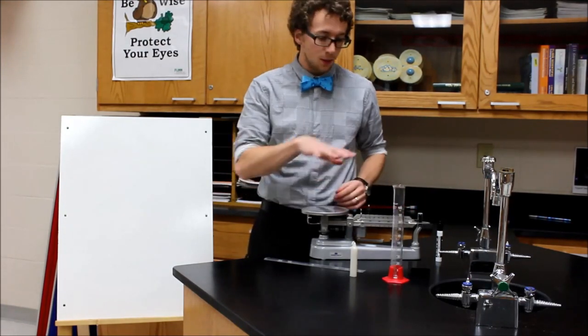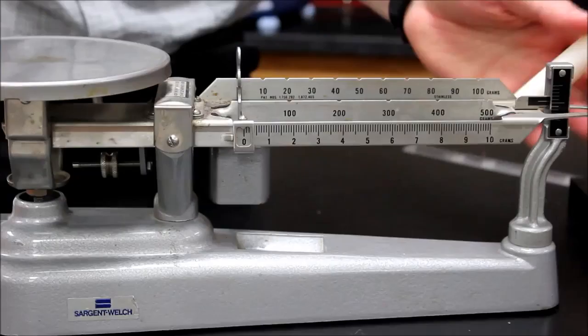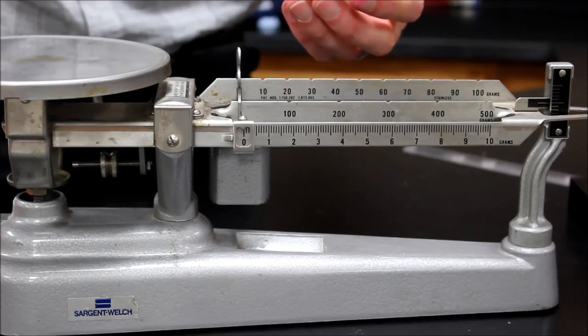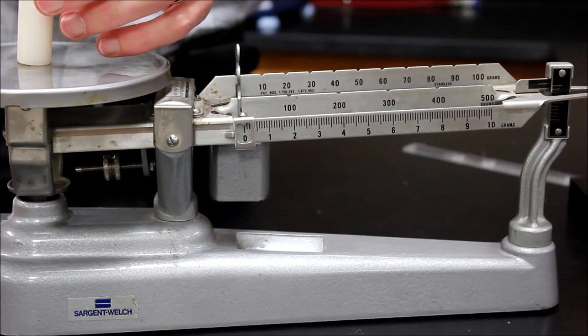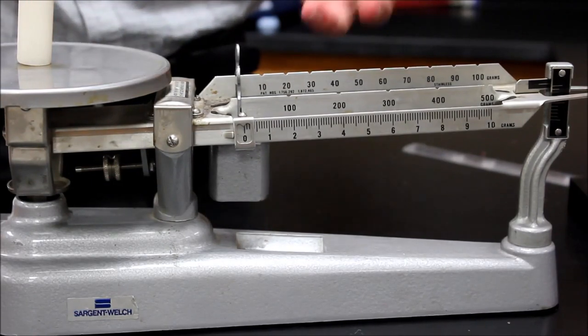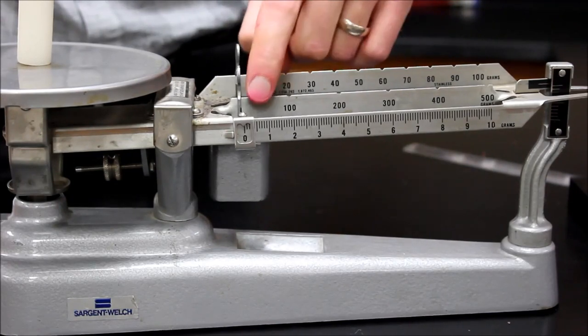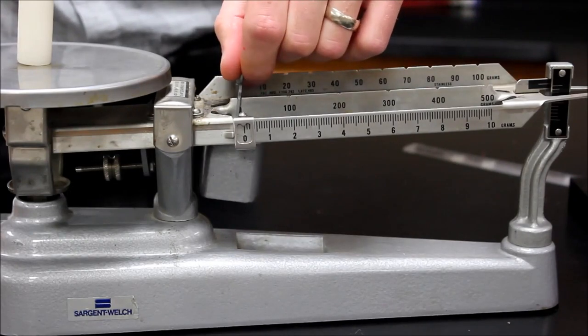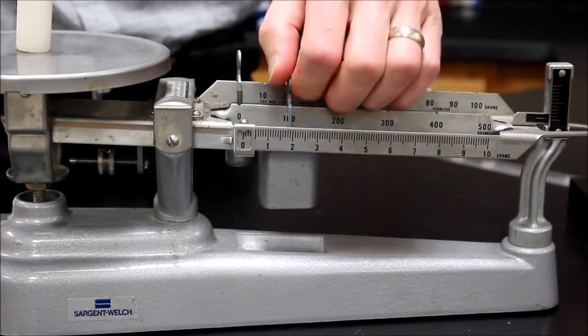So to start off with we're going to do the triple beam balance. Now the first thing I want to do is place the object that I want to weigh in the center of the pan on the triple beam balance. To start off with I'm going to move the largest weight first. That's this beam right here because it goes by 100 at a time. So I move it to the next notch and that's obviously way too much so I need to move it back.